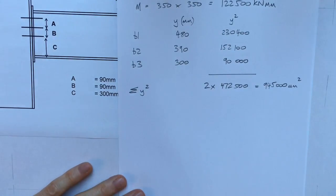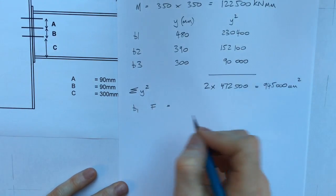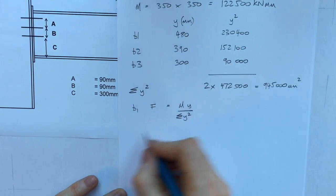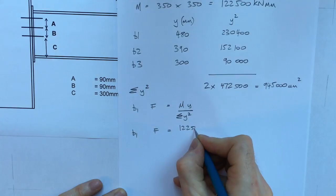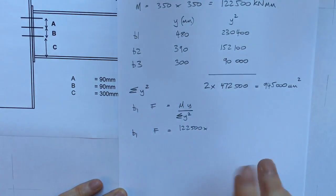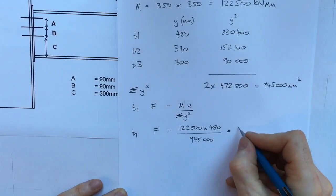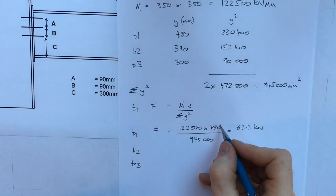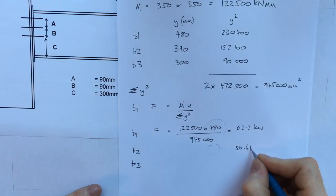Now I want to find out the force in the top bolt. For b1, f equals m times y over sum y squared. So 122,500 times 480 all over 945,000 gives me an answer of 62.2 kilonewtons. I can do the same for b2 and b3 using the different value of y in each case, that gives me 50.6 kilonewtons and 38.9 kilonewtons.